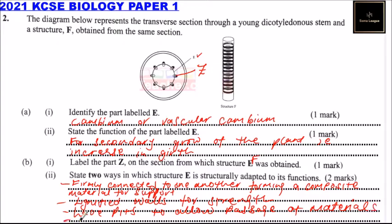And we can also say narrow to enhance capillarity. So you are supposed to give two, but I have given you four. So from any two of these you will be able to get two marks.